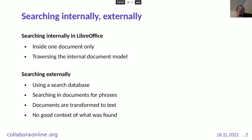When we search externally with a database, we have to transform the documents into text and feed it into a search engine, which then searches inside this transformed text for a result. The problem is that we don't get a really good context of these searches when a result is found — we know a result was found in a document, but we don't really know where exactly it was found or what the context around it is.